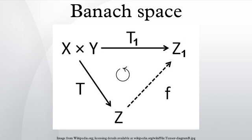The disk algebra A(D) consists of functions holomorphic in the open unit disk D ⊂ ℂ and continuous on its closure, equipped with the max norm on D̄. The disk algebra A(D) is a closed subalgebra of C(D̄). The Wiener algebra A(T) is the algebra of functions on the unit circle T with absolutely convergent Fourier series. Via the map associating a function on T to the sequence of its Fourier coefficients, this algebra is isomorphic to the Banach algebra ℓ1(ℤ), where the product is the convolution of sequences.